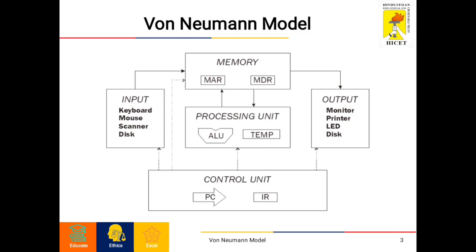The next one is the current instruction register (CIR). It stores the most recently fetched instruction while it is waiting to be decoded and executed. The next one is the instruction buffer register (IBR). An instruction that is not to be executed immediately is placed in the instruction buffer register, IBR.